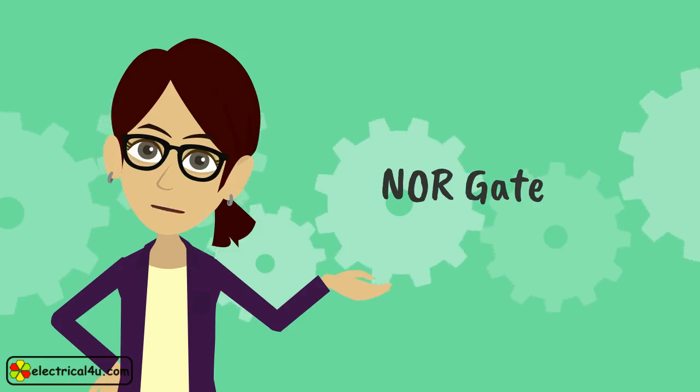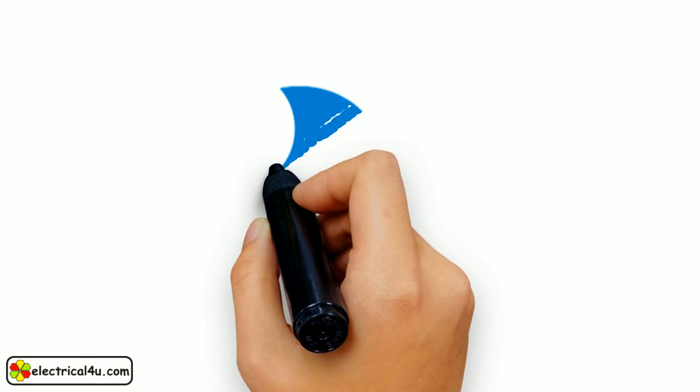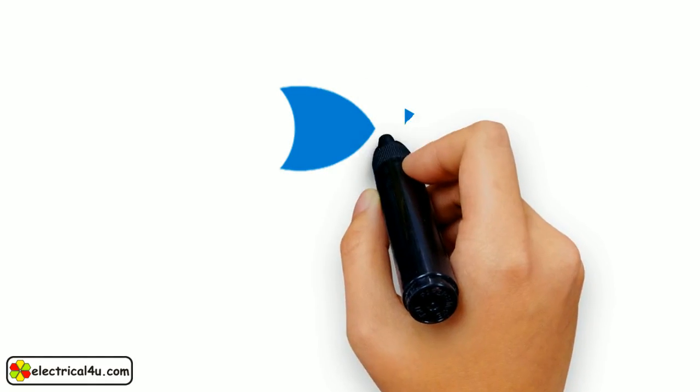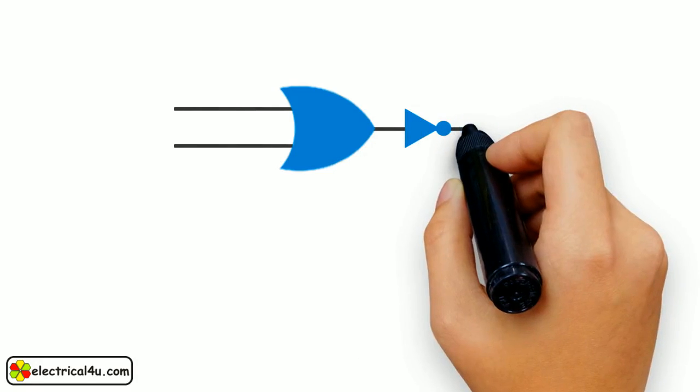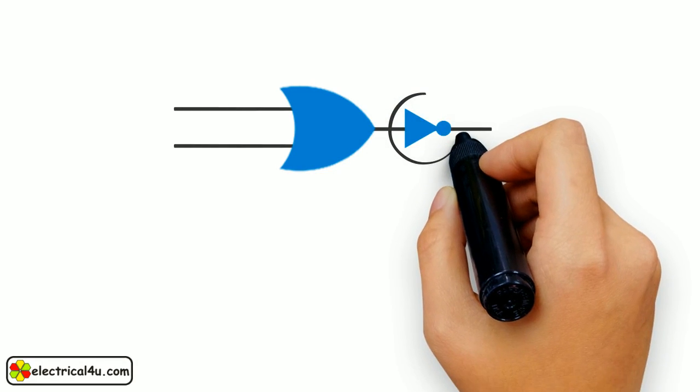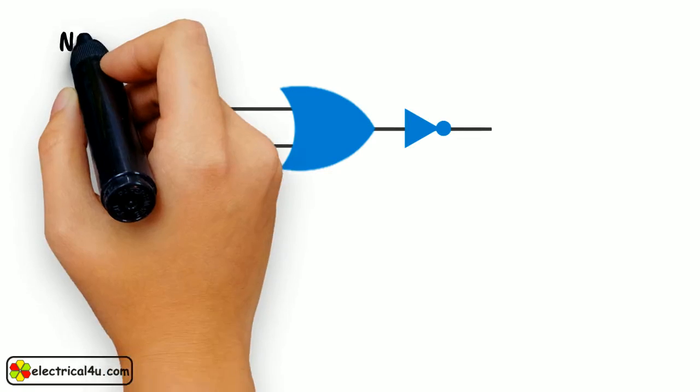Let us discuss about NOR gate. NOR gate means NOT OR gate. In a NOR gate, an OR gate is inverted through a NOR gate. Actually an inverted OR operation is NOR operation and the logic gate that performs this operation is called NOR gate.